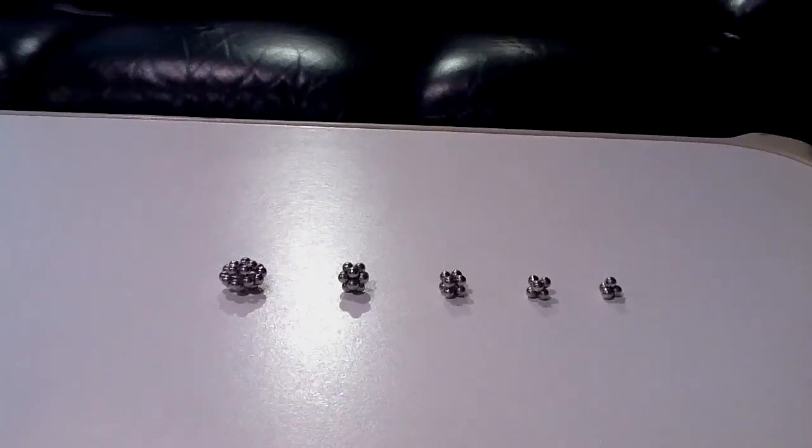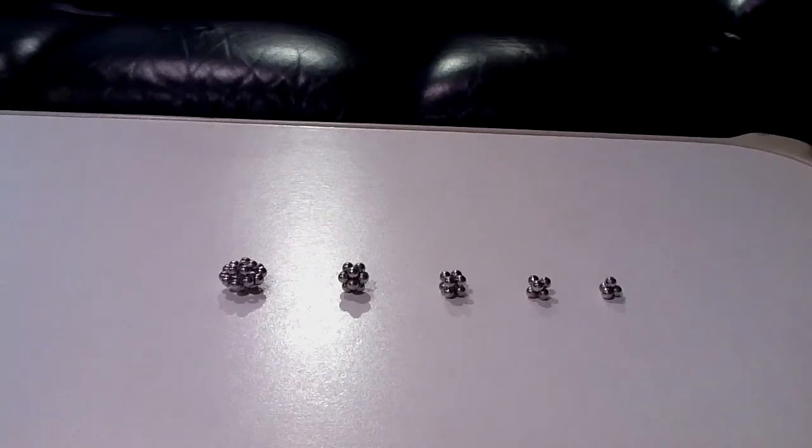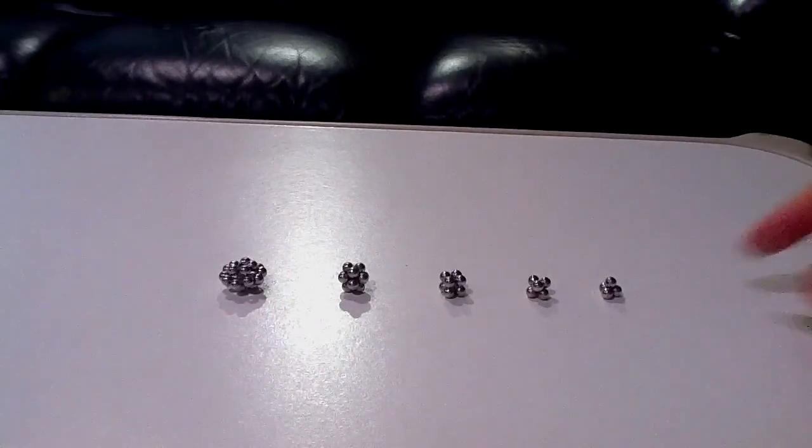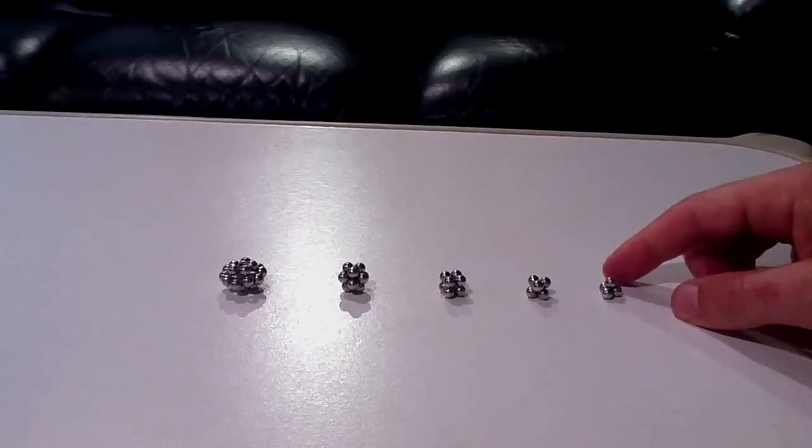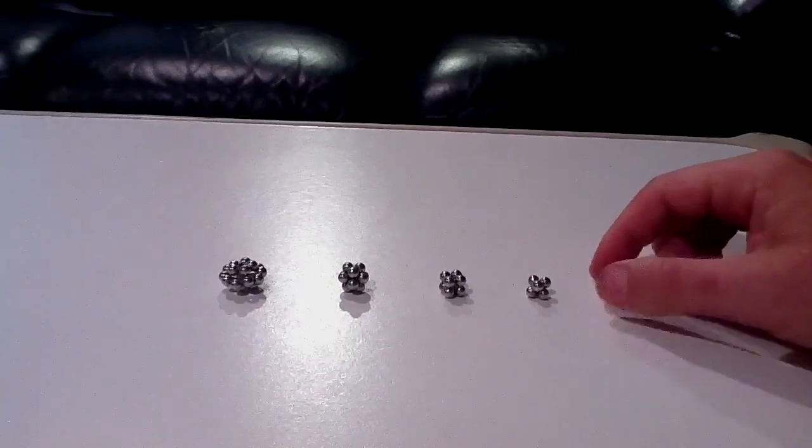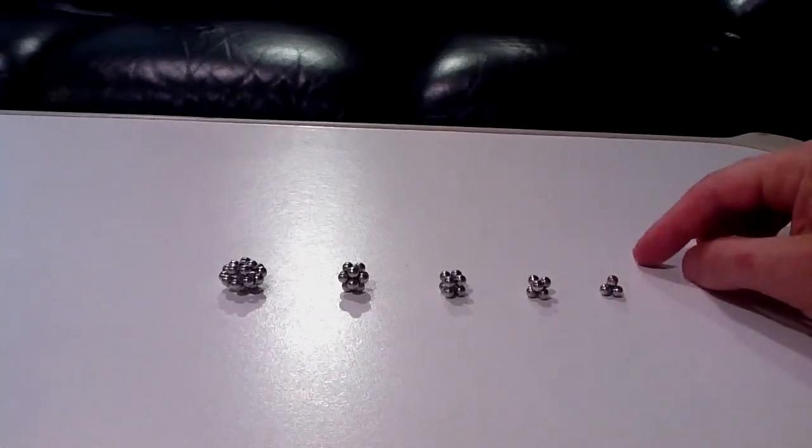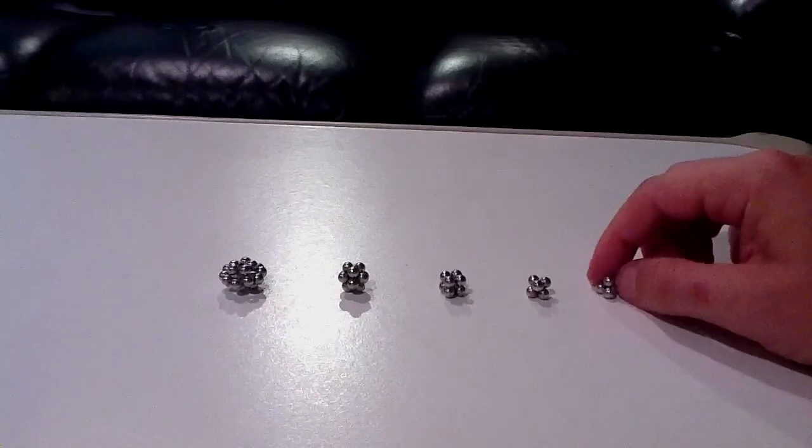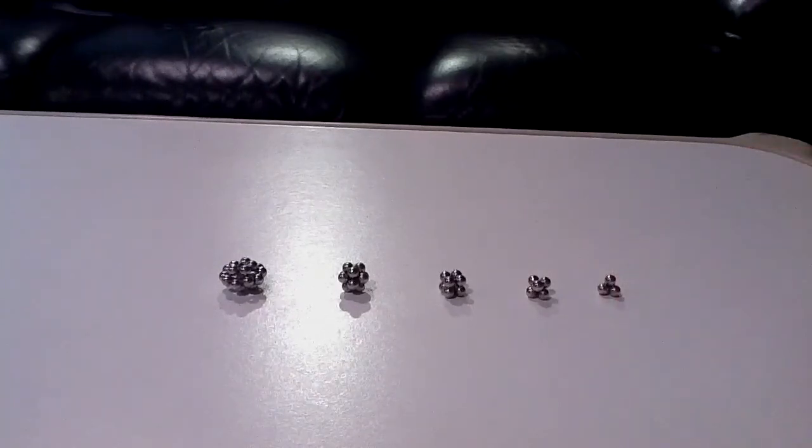Here are the Platonic solids made with buckyballs. So what we have here is the tetrahedron. It's made of four triangles and it's got four vertices and so four buckyballs.